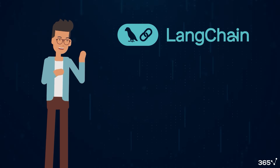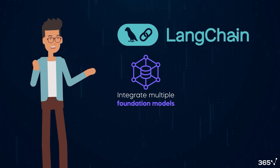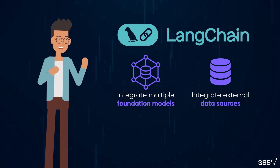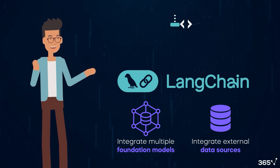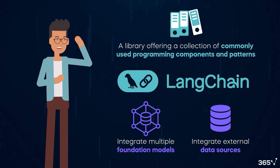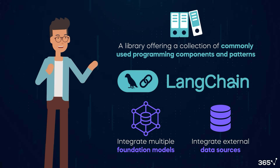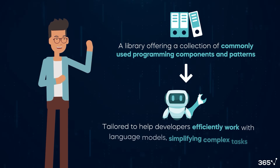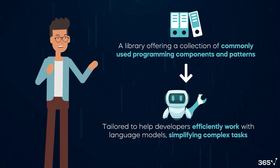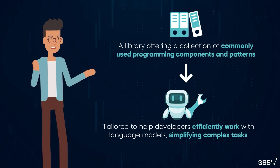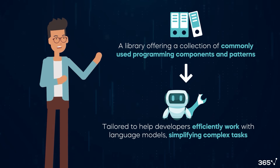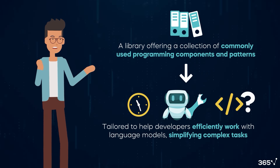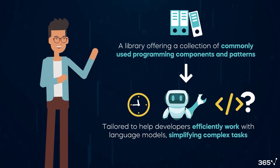Similarly, LangChain enables developers to integrate multiple foundation models and external data sources. The platform essentially serves as a library, offering a collection of commonly used programming components and patterns. These tools are tailored to help developers efficiently work with language models, simplifying complex tasks. This helps developers save time and prevents their applications from inconsistent code.